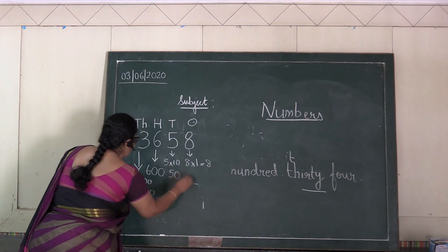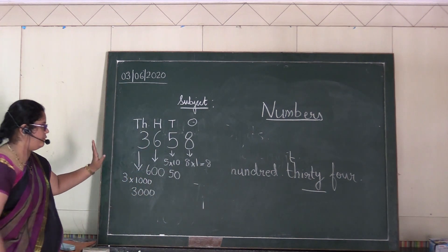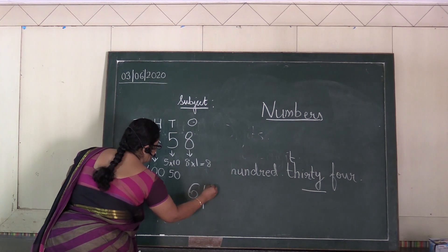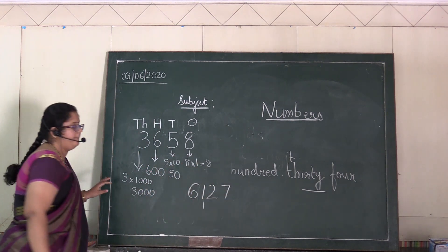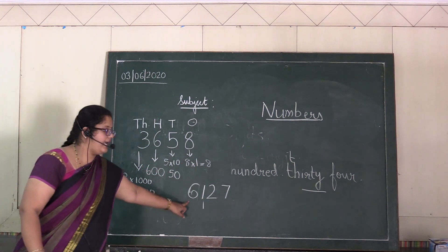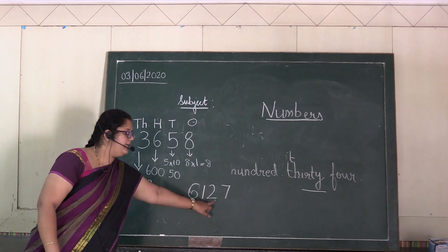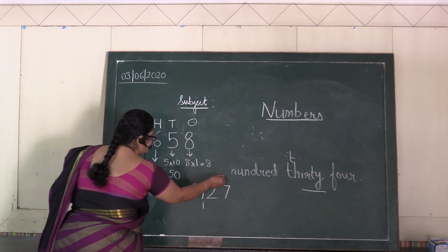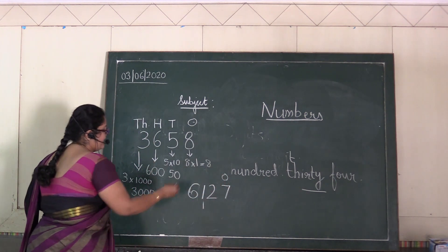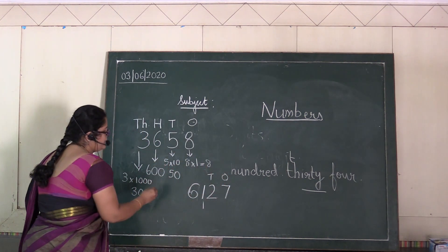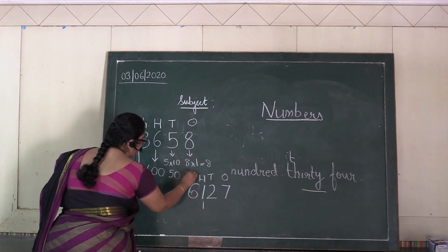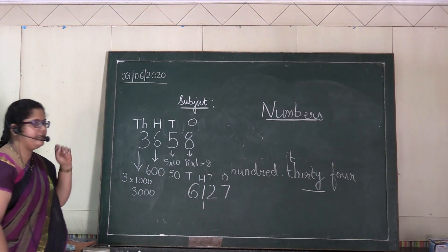Another example — I will repeat one digit. Six, one, two, seven: six thousand one hundred twenty-seven. So you can clearly say: one's place is seven, ten's place is two, hundreds place is one, and thousands place is six.